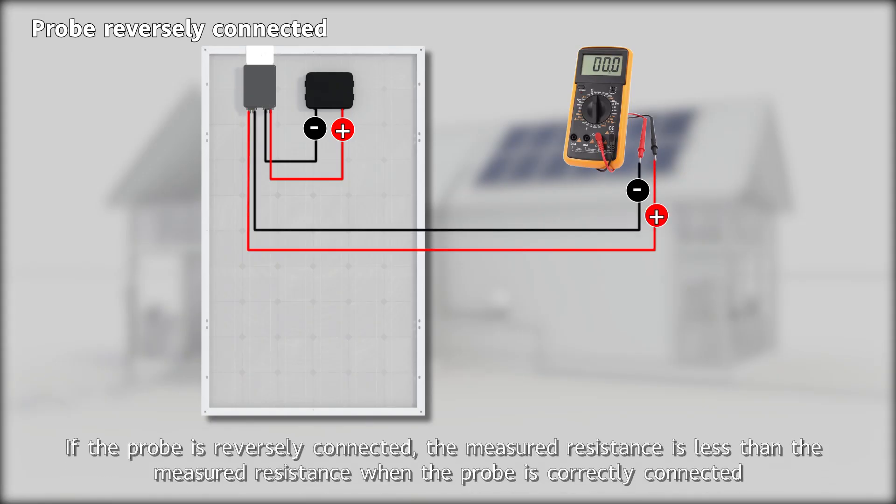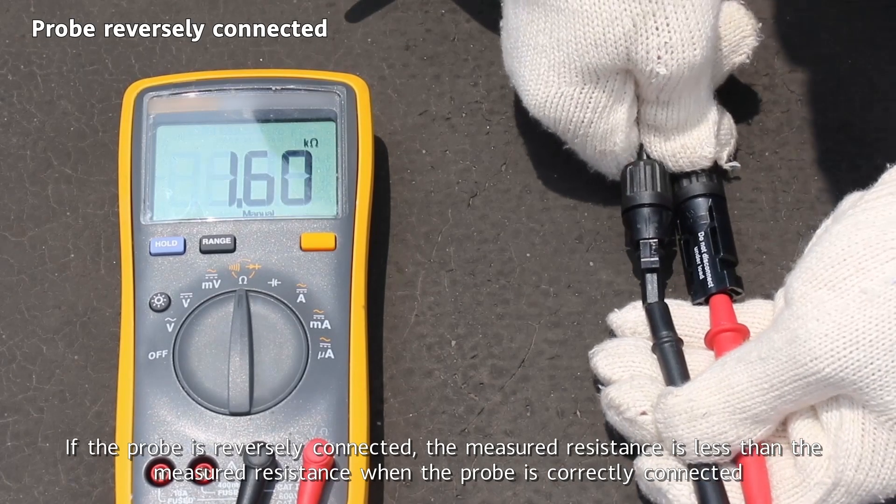If the probe is reversely connected, the measured resistance is less than the measured resistance when the probe is correctly connected.